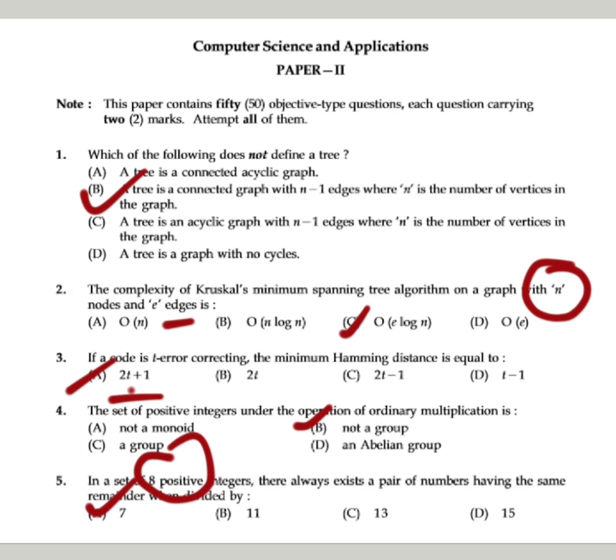What remainders can there be when dividing by 7? 0, 1, 2, 3, 4, 5, 6. But your number is 8, so at least one will repeat if you divide from 7.